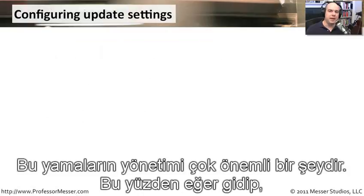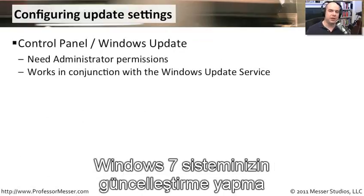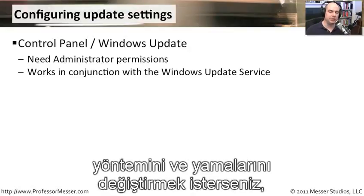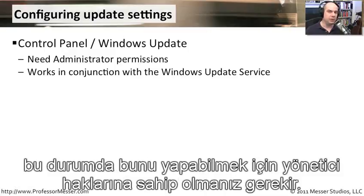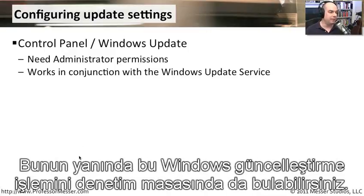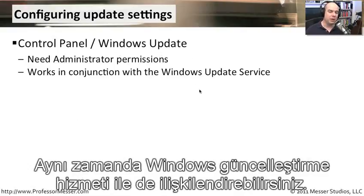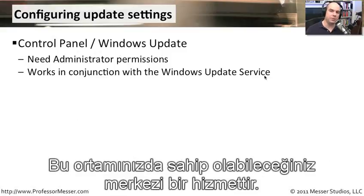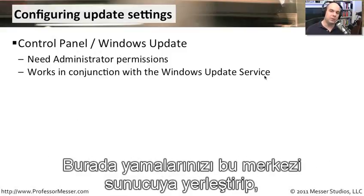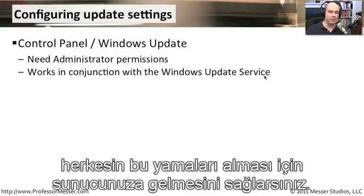The administration of patches is very important. If you ever want to change the way your Windows 7 system gets patches, you need administrator permissions to do this. You can also have Windows Update, found in your Control Panel, integrate with the Windows Update service — a central server in your environment where you put the patches, and everybody goes to that server to get them.